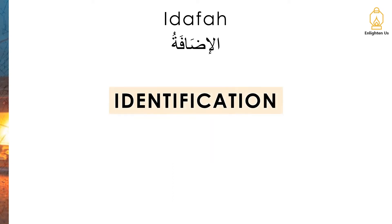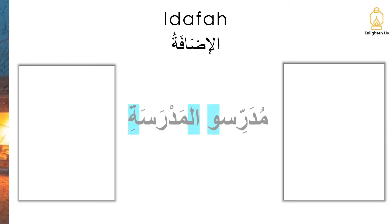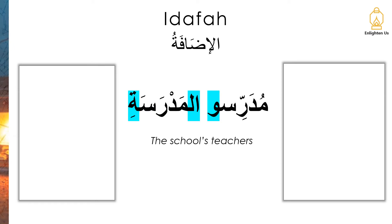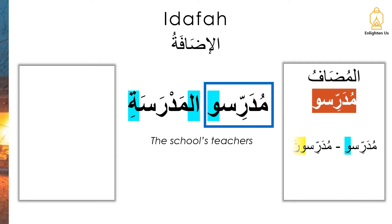Now let's look at an example for identification — ta'arif. We have mudarris al-madrasati: the school's teachers. Mudarris is our mudhaaf. In its original form it would have been mudarrisuna. This is what is meant by not taking tanwin or the nun — because it's plural, the nun is dropped off for it to be a mudhaaf. It's common because it's not preceded by al or any other indicator.